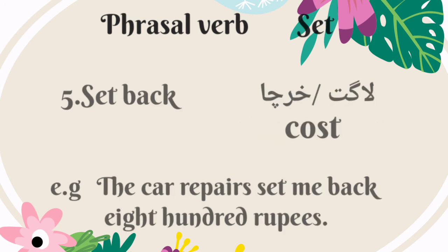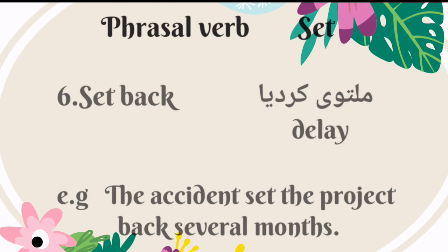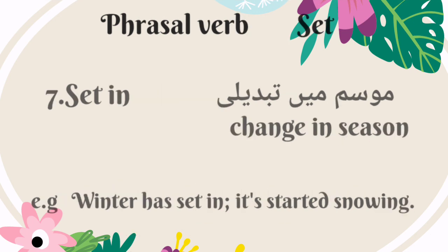The fifth phrasal verb is 'set back.' It means to cost — Urdu mein is ka matlab hai lagat ya kharcha. For example: the car repairs set me back 800 rupees. 'Set back' also means to delay — Urdu mein is ka matlab hoga multavi kar dena. For example: the accident set the project back several months. The seventh phrasal verb is 'set in.' It means change in season — Urdu mein is ka matlab hai mausam mein tabdeeli. For example: winter has set in; it started snowing.